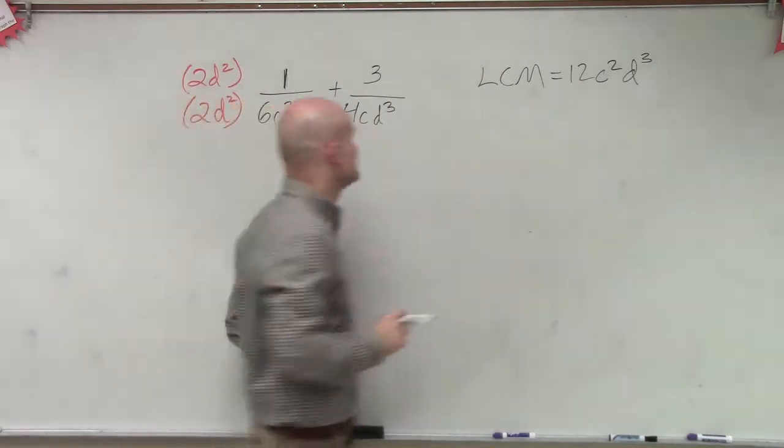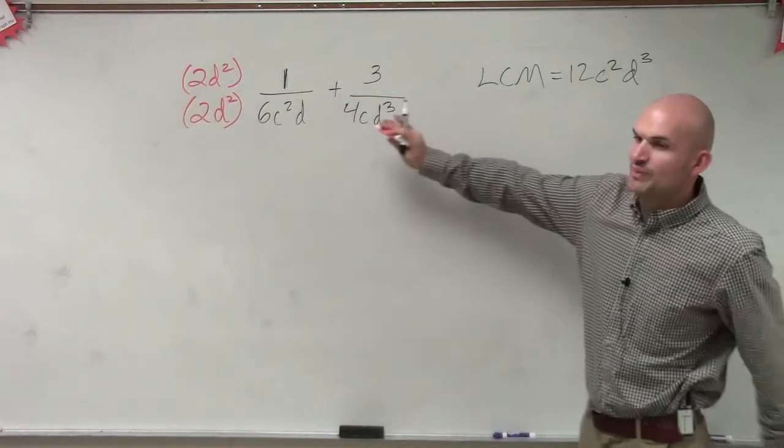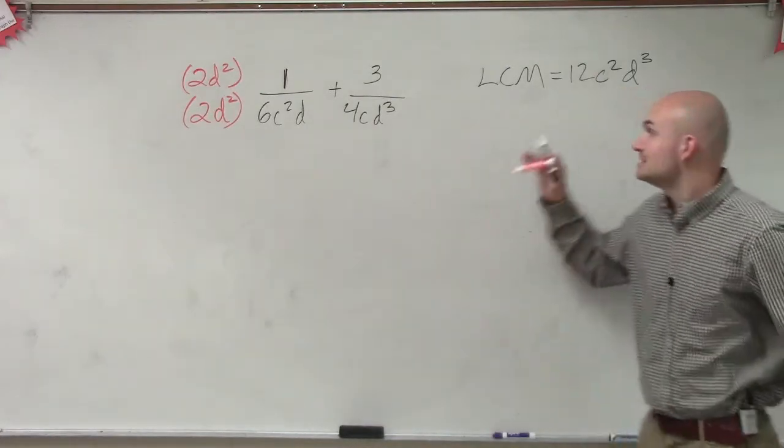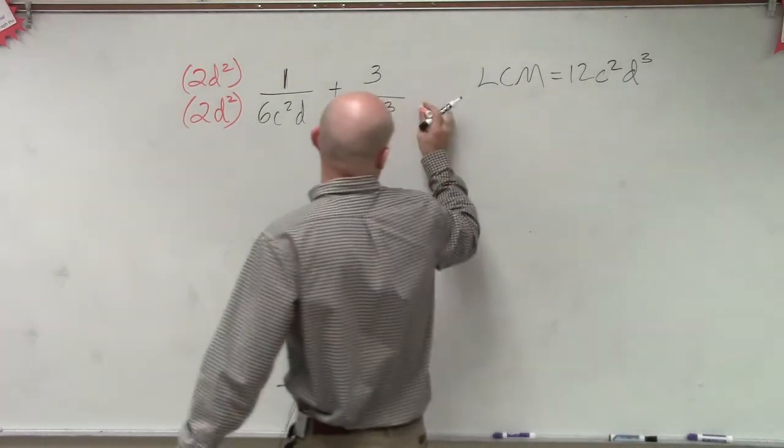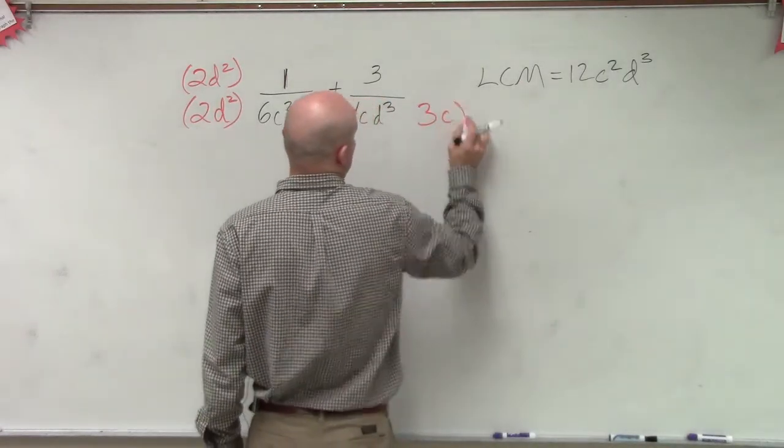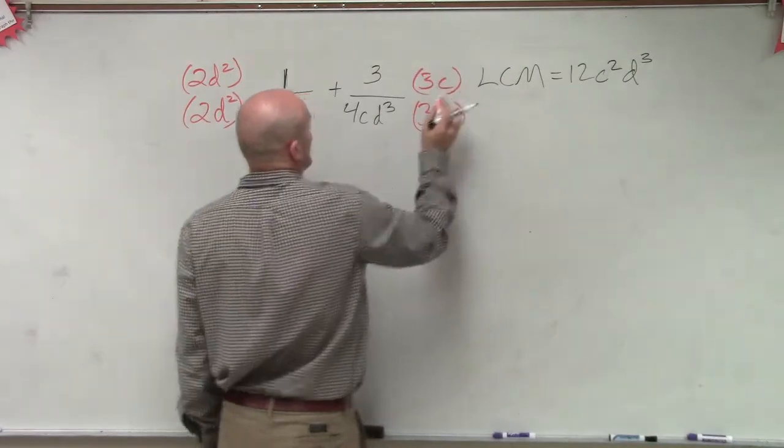Then, over here, we say, all right, what do I need to multiply 4cd³ by to get it to 12c²d³? So that would be 3c, all right?